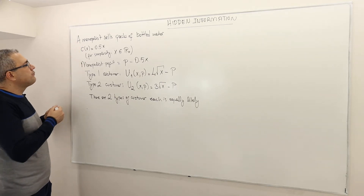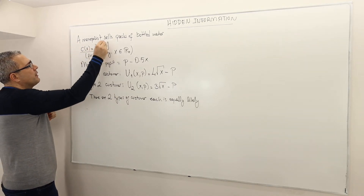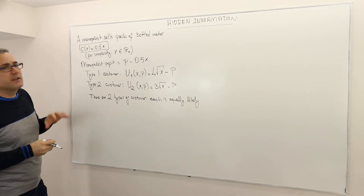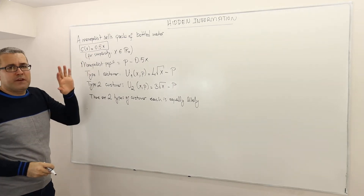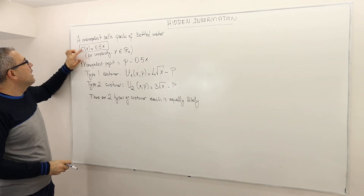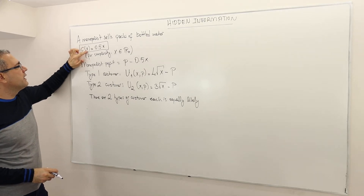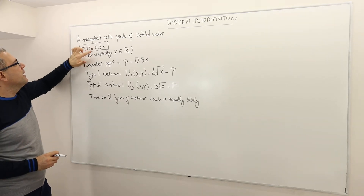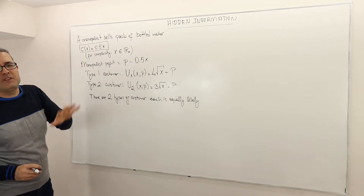Here the cost of the monopolist is a very simple function. There's no fixed cost. The cost of producing X amount of bottled water is equal to 0.5 times X.